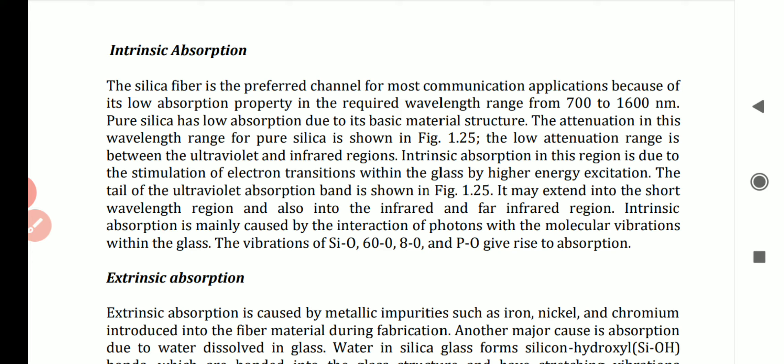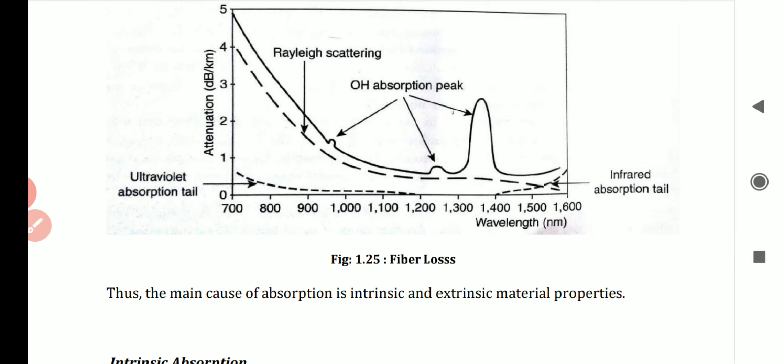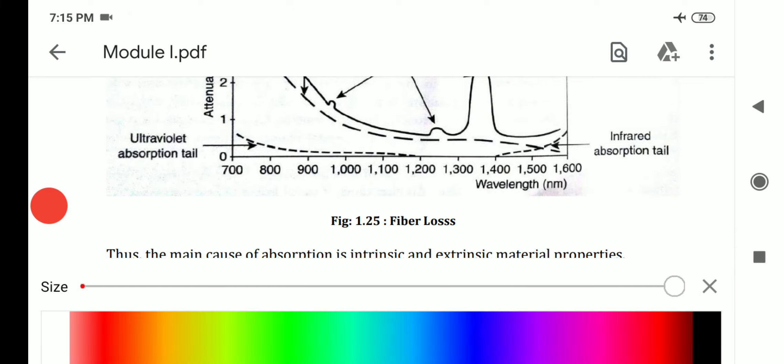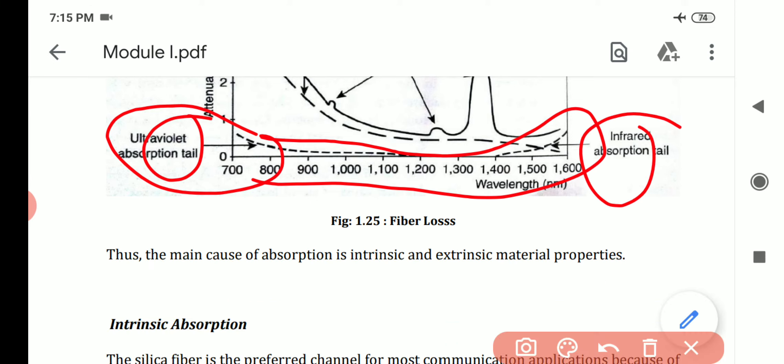Intrinsic absorption in the UV region is due to stimulation of electron transitions within the glass by higher energy excitation. When light hits the core region and undergoes total internal reflection, some electrons are transited — this is the main cause of absorption. The tail of the ultraviolet absorption band extends into the short wavelength region and also into the far infrared region.